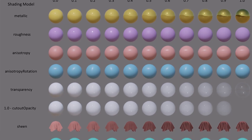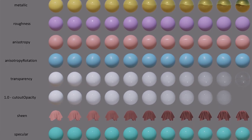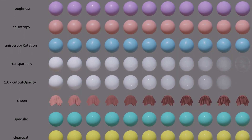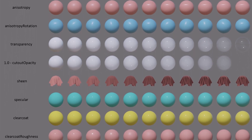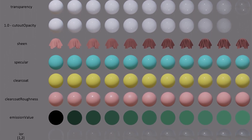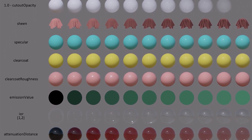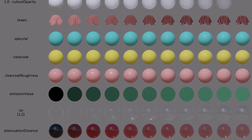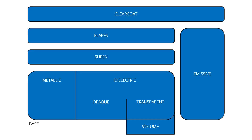Besides these five texture maps, the DSPBR appearance type supports 13 extra values which can be altered to get the correct specific appearances. These fall into the categories of sheen, flakes, clear coat, emissions, and volume.